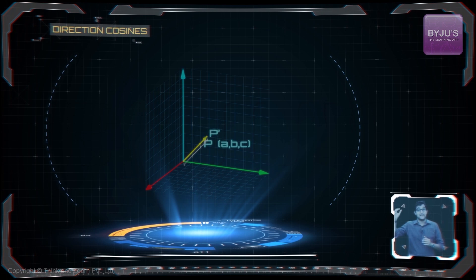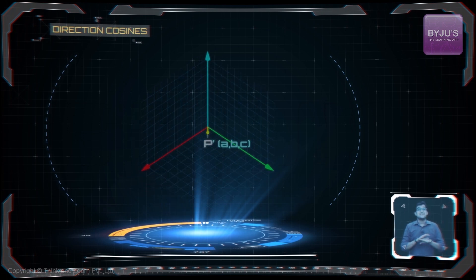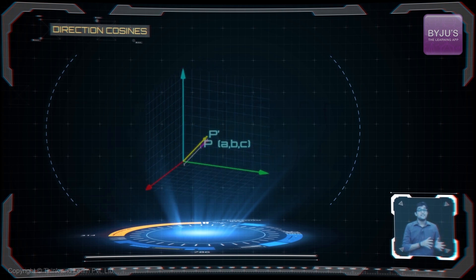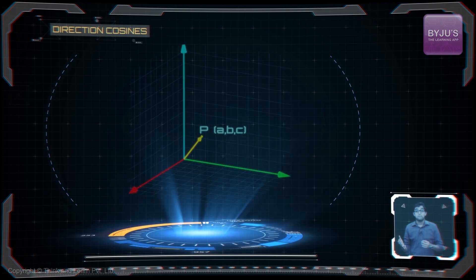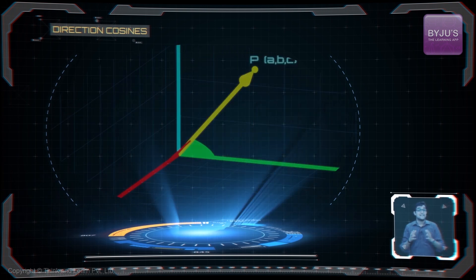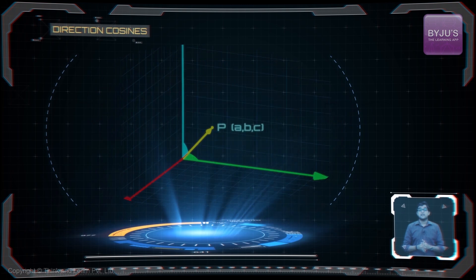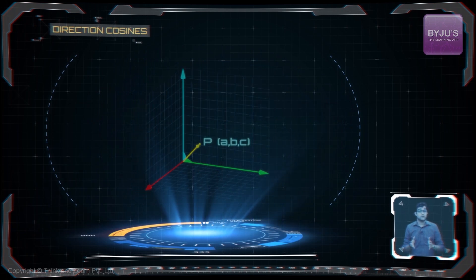Even if we extend this line segment, the direction does not change — only the distance of P from the origin changes. This unique direction in space can be described by the angle this directed line segment makes with the X, Y, and Z axes. This is very similar to the slope we use to describe the direction of a line in two-dimensional geometry.